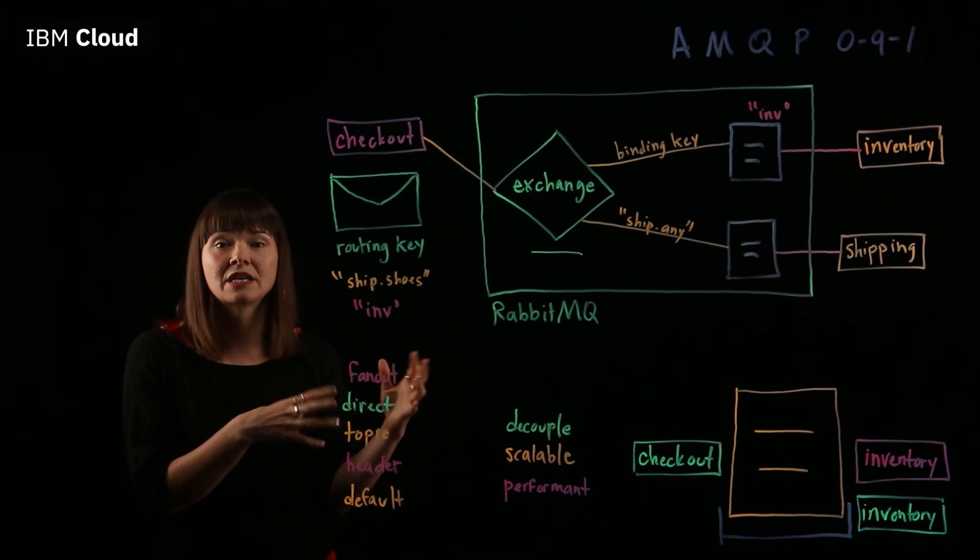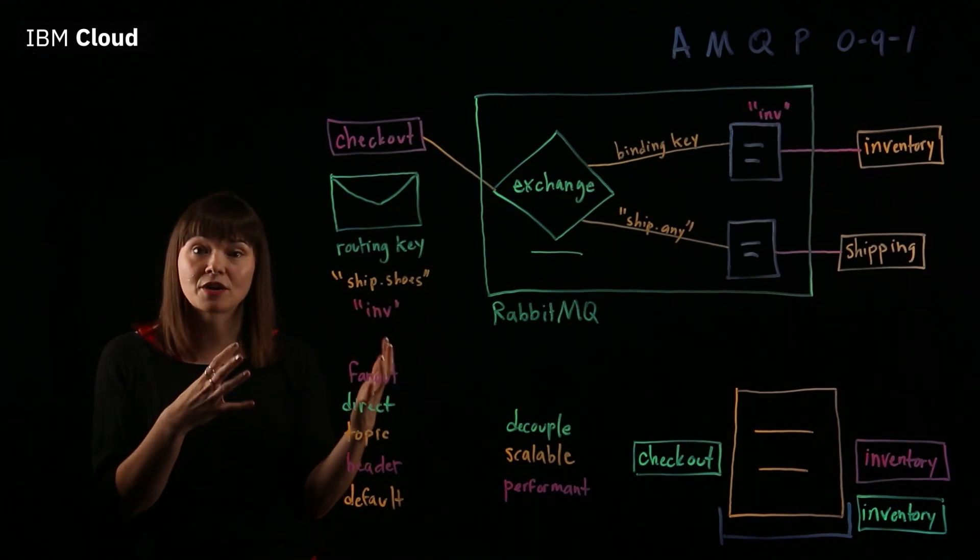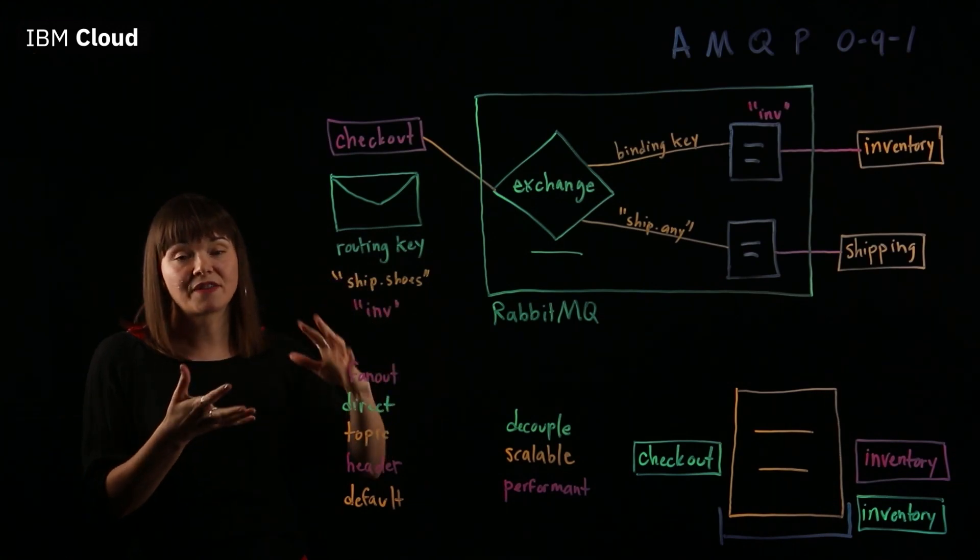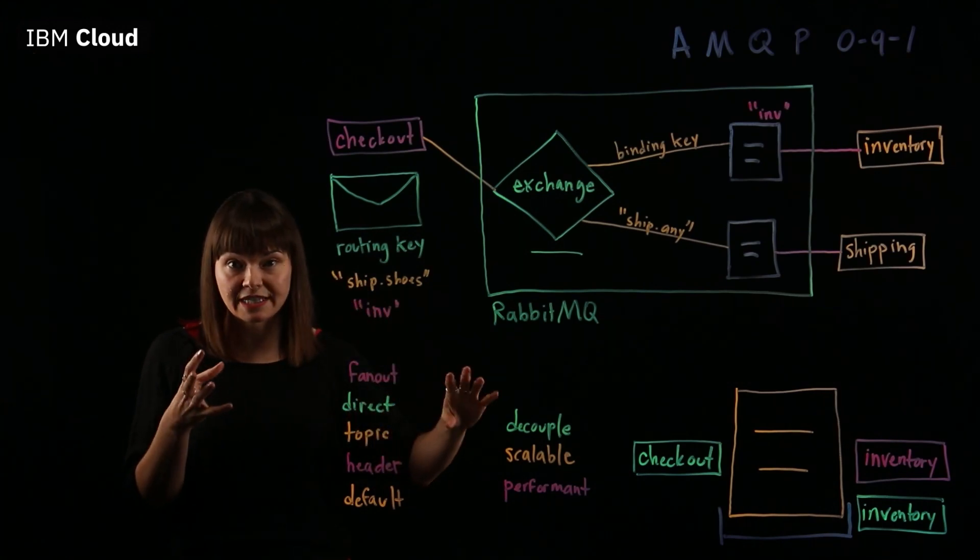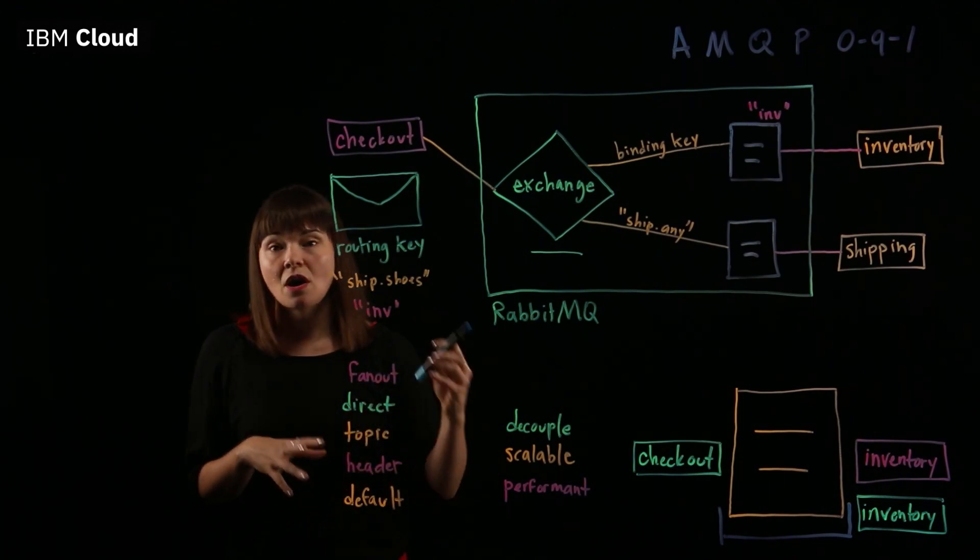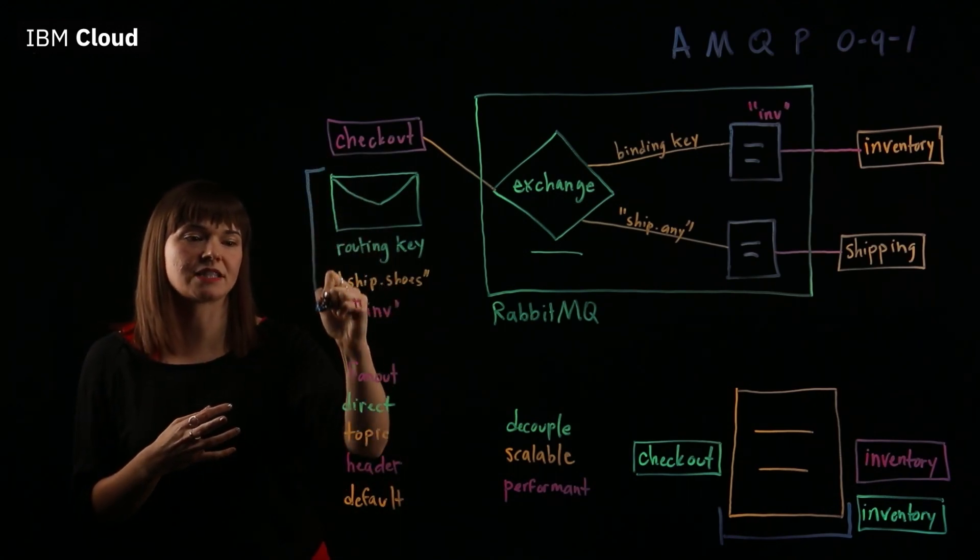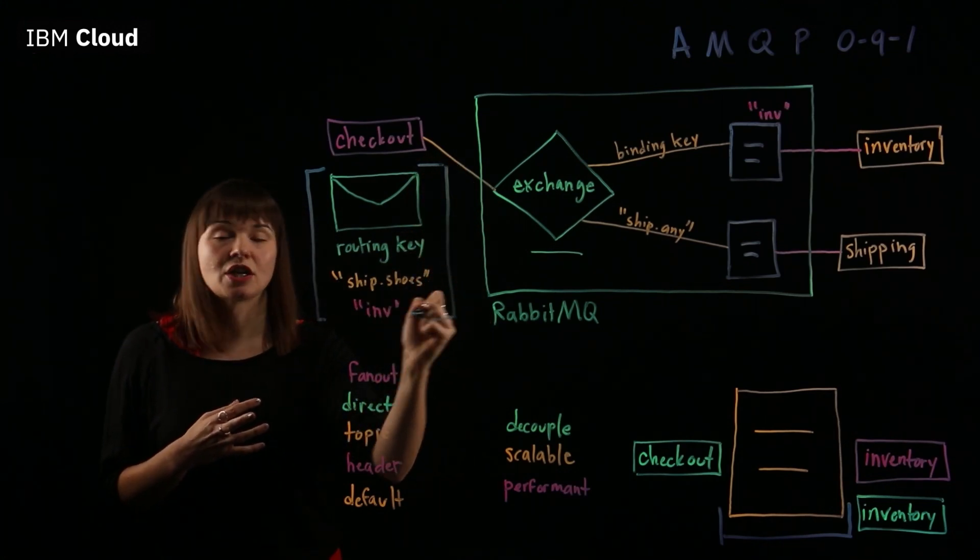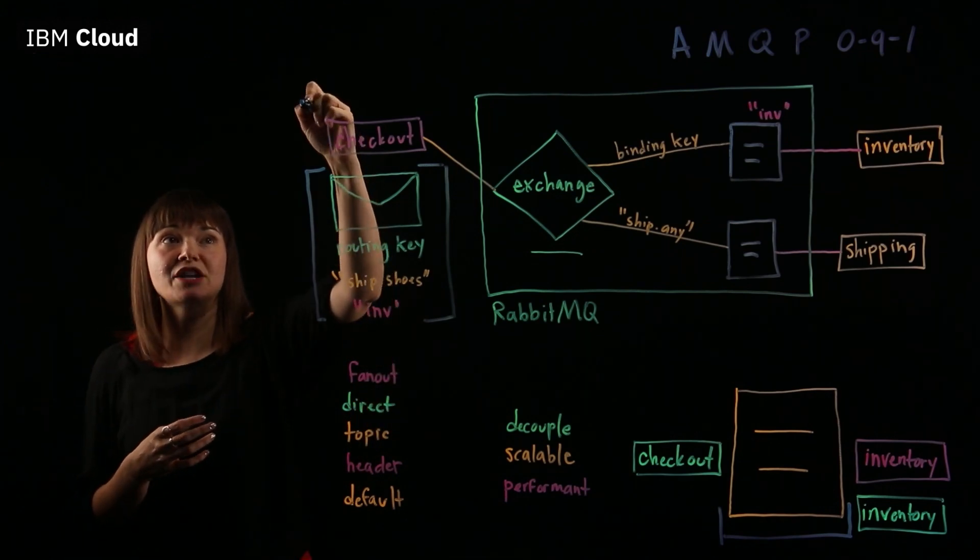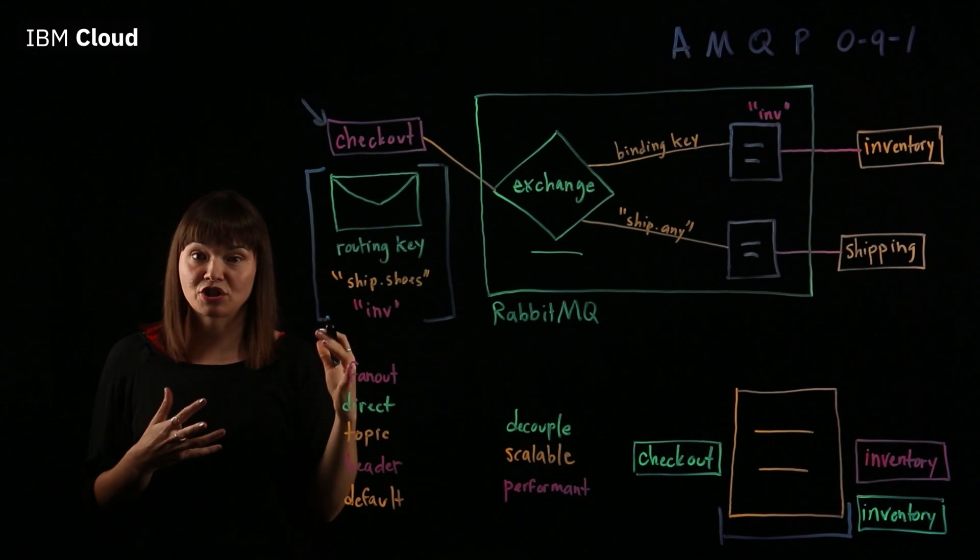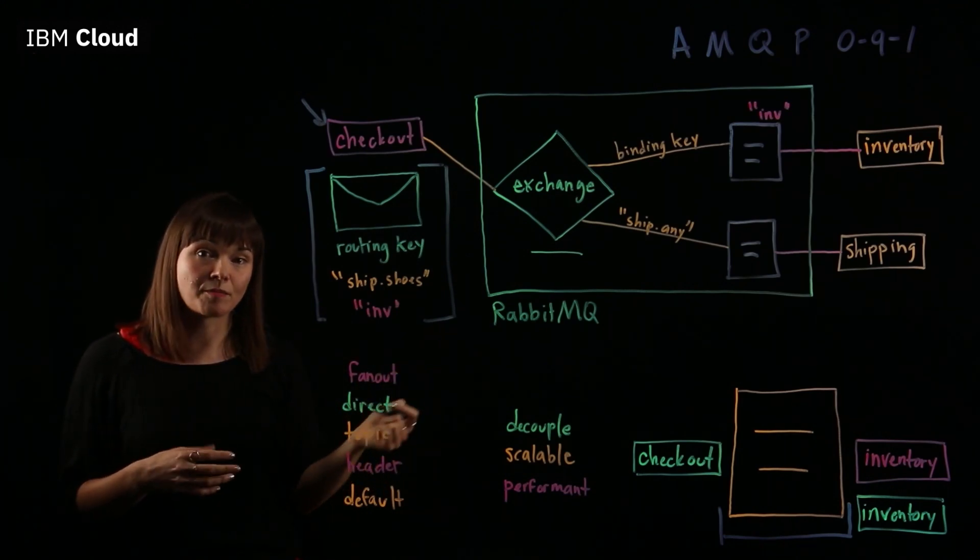Also, with other message brokers, the broker administrator, when they set up the message model, that's when all the configuration for how a message moves through the system, that's when it's all defined. But with RabbitMQ, the way the message moves through the system is largely a part of the message metadata. So in this case, it's the application and the developer that has a lot of control with the way messages move through the system, rather than the broker administrator.